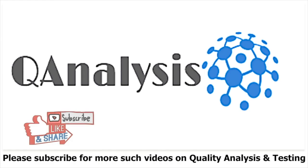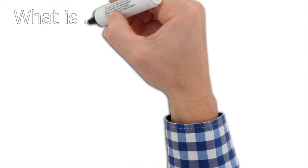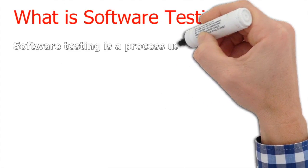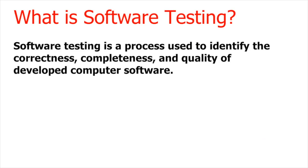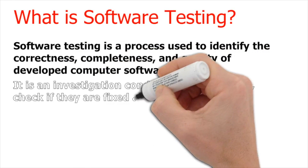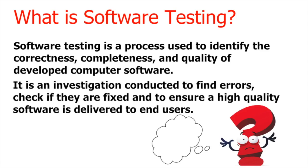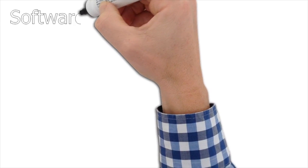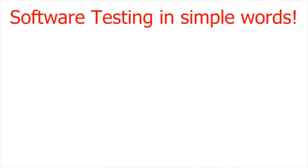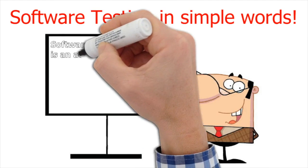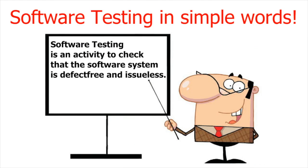So here we go — what is software testing? Software testing is a process which is used to identify the correctness, completeness, and quality of developed computer software. It is an investigation conducted to find errors, check if they are fixed, and to ensure a high quality software is delivered to users. If that was too technical, in simple words: software testing is an activity to check that the software system is defect free and issue-less.